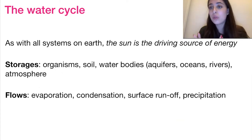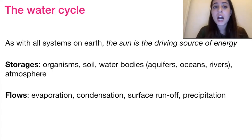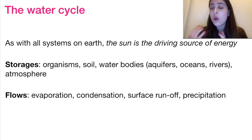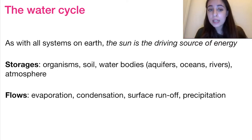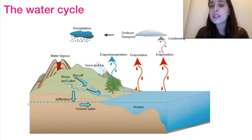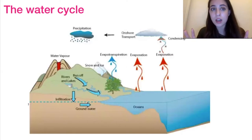So let's have a look at the typical water cycle and the different storages and flows that it has. We're applying the systems approach to water by identifying the storages and how water can flow between them. As with all other systems on Earth, the sun is the driving force for basically all reactions. The storages in the water cycle are organisms, soil, water bodies like aquifers, oceans, rivers, and the atmosphere. Flows between them include evaporation, condensation, runoff, and precipitation. Water rises from oceans to the atmosphere via evaporation; the opposite is precipitation, which can fall on the Earth, and runoff between different small bodies of water is a big transfer as well.